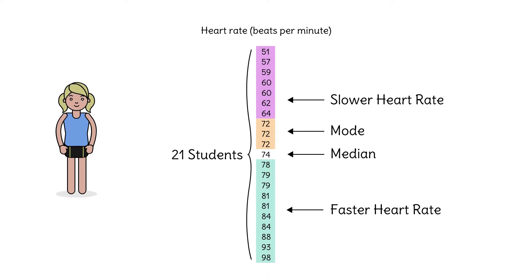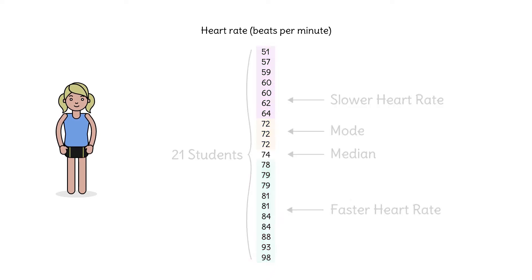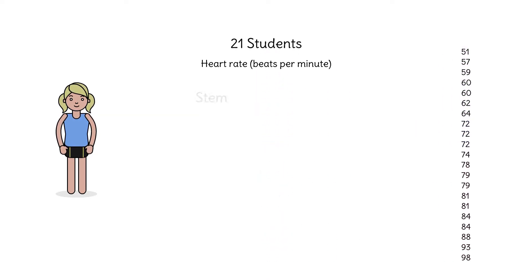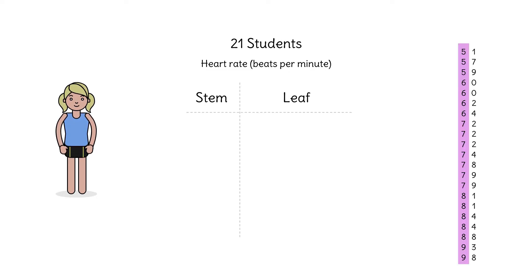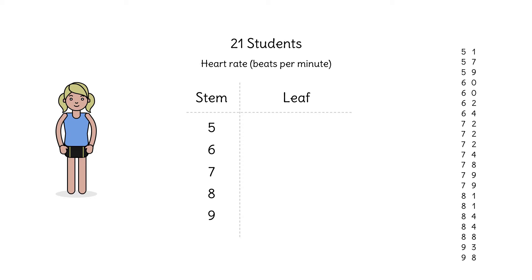But there's a better way to organize this data so we can see the overall spread and understand the distribution of heart rates. Instead of listing the data, we can organize it in a stem and leaf plot. To construct it, we list the first digits of the heart rates: 5, 6, 7, 8, and 9. Those are the stems of our plot.